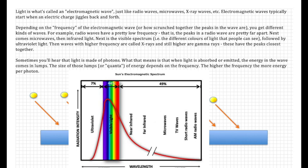You'll sometimes hear that light is made of photons. What that means is that when the light is absorbed or emitted, the energy in the wave comes in lumps. The size of those lumps, or quanta of energy, depends on the frequency. The higher the frequency, the more energy in the photons. So it's important to remember that only about 40% of this energy is actually visible.